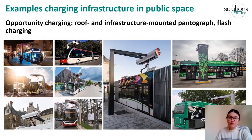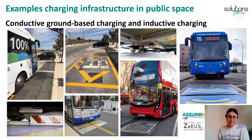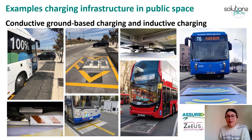Here we can see different examples of roof-mounted and infrastructure-mounted pantographs, also flash charging in the center of the slide. This is the system operated by Semitan in Nantes at the E-Busway. You will notice there are different designs and visual styles for the several chargers. And in this last slide, I want to share some examples of conductive ground-based charging — where the charger is integrated in the ground, so the bus needs to position itself above it to charge. And on the right side of the slide you have inductive charging, also known as wireless charging, with the example of EMT Madrid, one of the lines they are piloting and operating this technology.